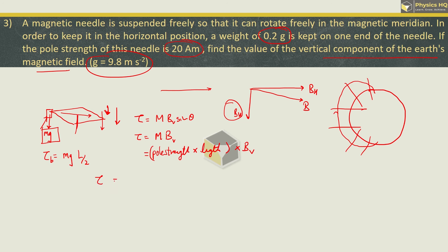Now, for this needle to remain horizontal, both torques should be the same. So, the magnetic field should be given by the mass. We have already told this: the pole strength is 20, the length of the magnet is L, and the magnetic field is BV.